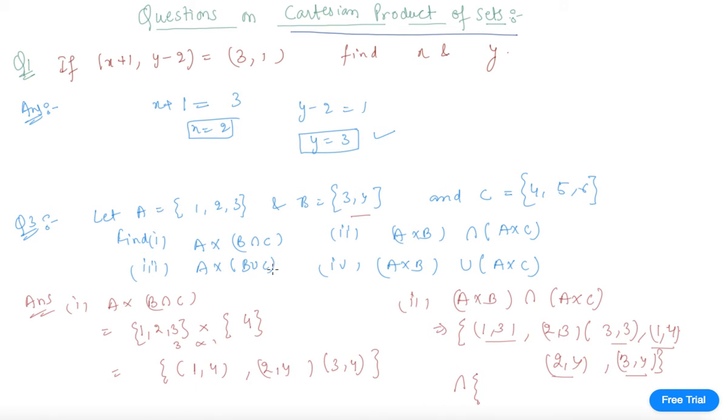Similarly, we can find B ∪ C, which we have discussed in previous lectures on intersection and union. A × (B ∪ C) is easy to find. Let me write B ∪ C again for you: {3, 4, 5, 6}.